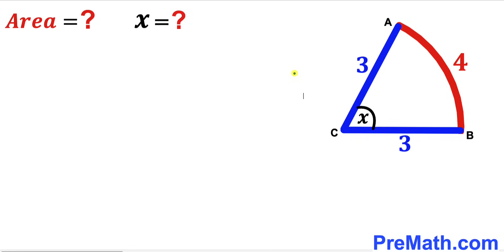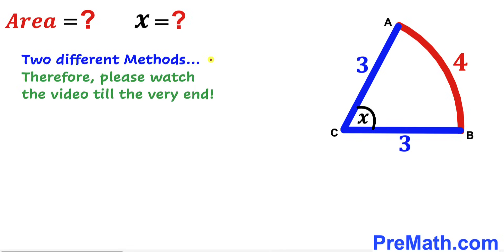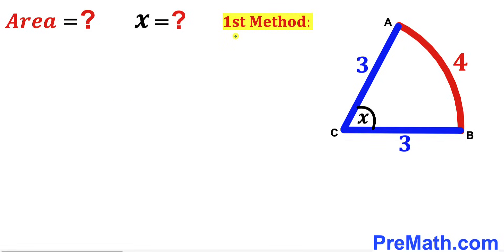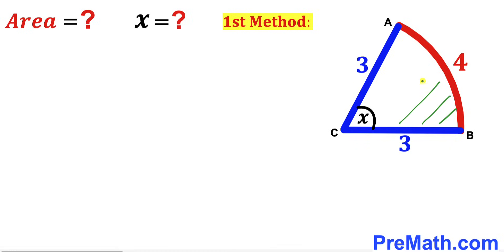Let's get started. In this video I'm going to share two different approaches, so please watch till the very end. In our first method, we are going to calculate angle x first, and once we figure out angle x, we will calculate the area of the sector. We can see that sector ACB is part of a big circle.